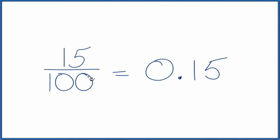So the fraction 15 one hundredths, that equals a decimal 0.15. They're the same value, just different representations. The other way we could do this,